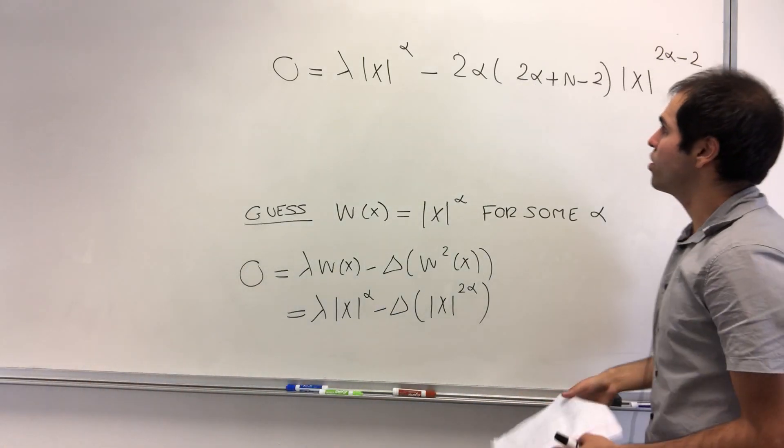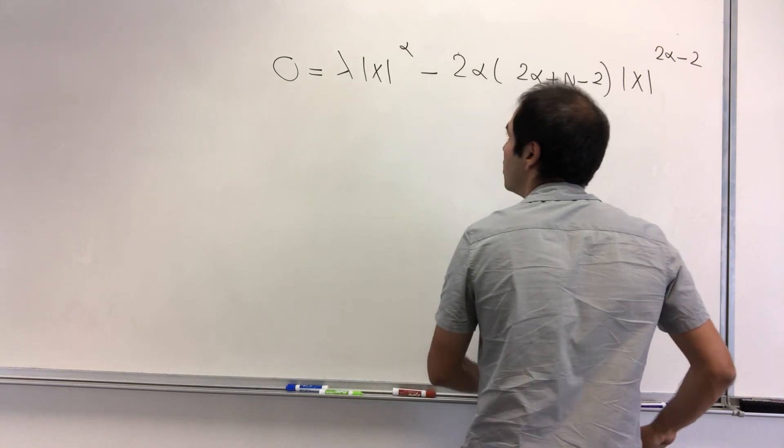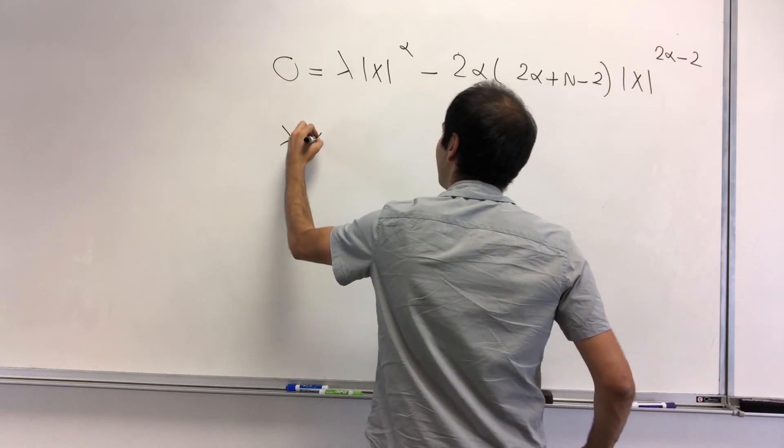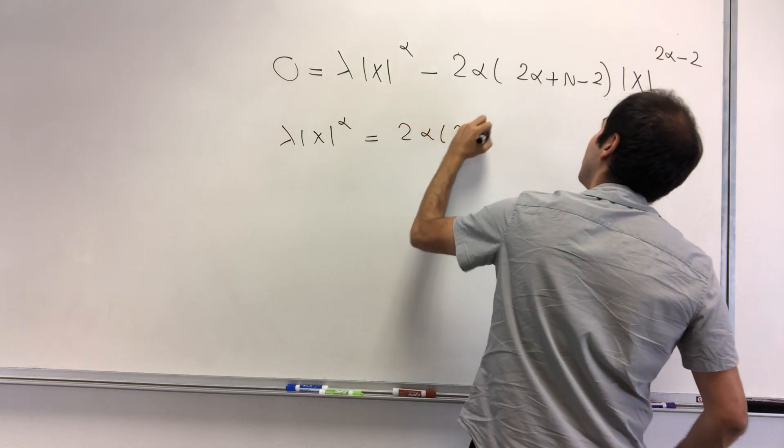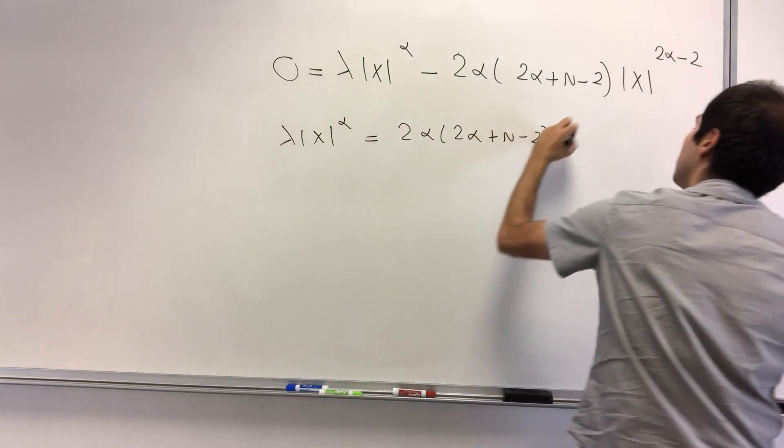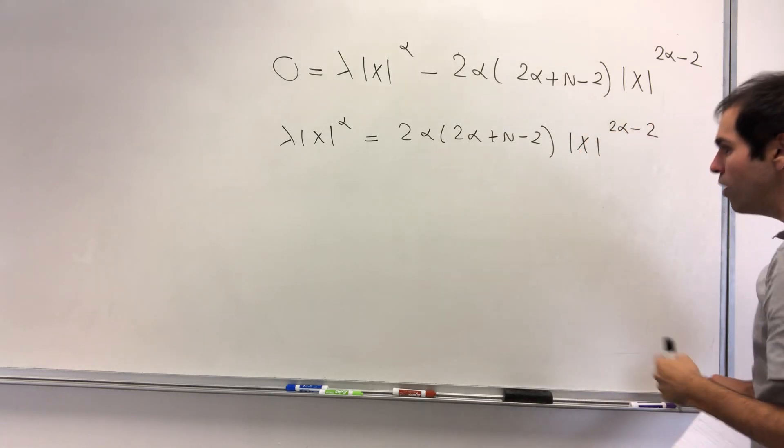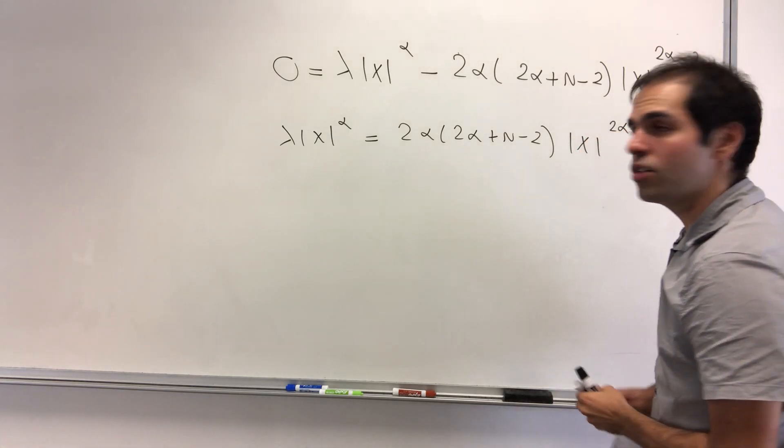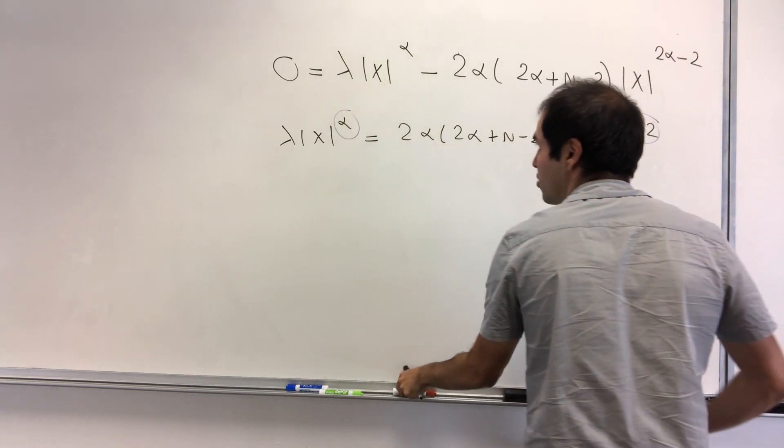Okay, but now here's the cool thing. Essentially we get these power functions are equal, so we get lambda x to the alpha equals 2 alpha times 2 alpha plus n minus 2, times x to the 2 alpha minus 2.